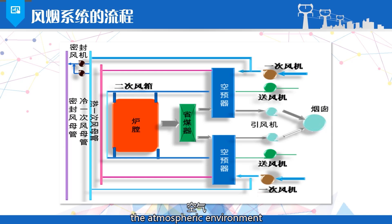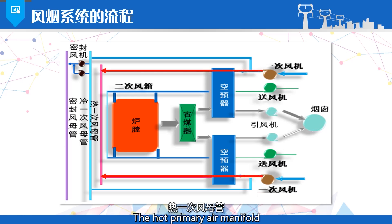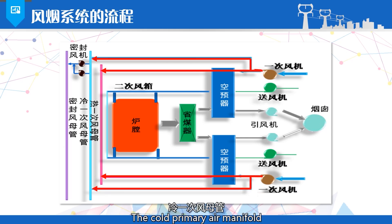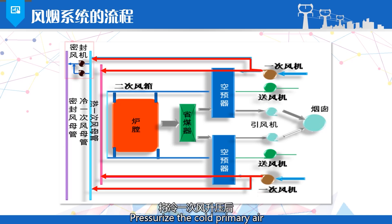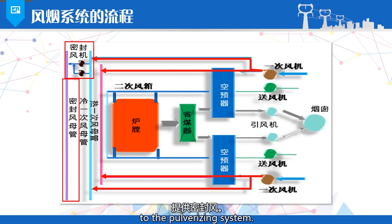Air from the atmospheric environment is compressed by the primary air fans and divided into two paths. One path passes through the air preheater where it is heated by the flue gas and then converges at the hot primary air manifold, which is then introduced into the pulverizing system as a drying agent and a transport agent. The other path converges at the cold primary air manifold, which provides cold air to the pulverizing system and also provides the air source for the seal air fans. The seal air fans pressurize the cold primary air through the seal air manifold, providing seal air to the pulverizing system.